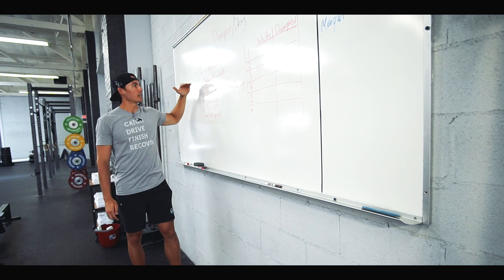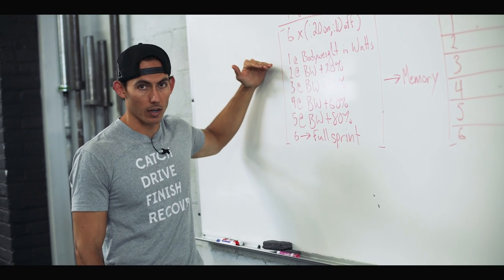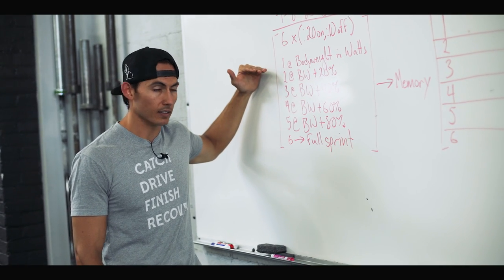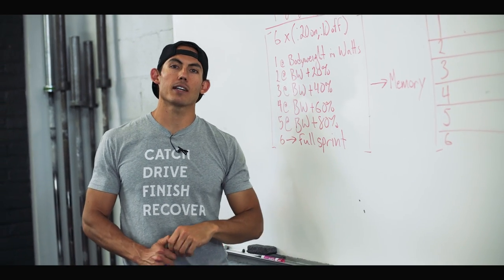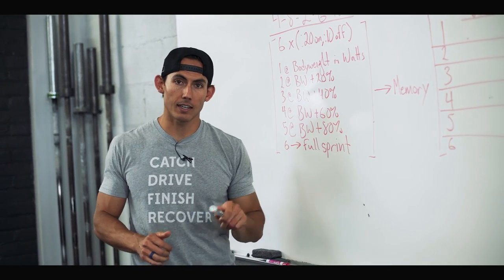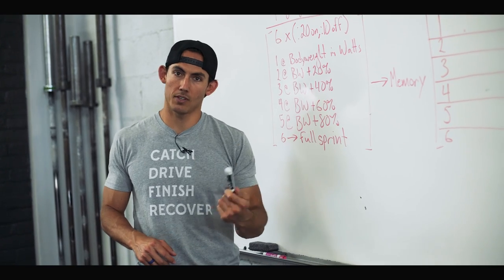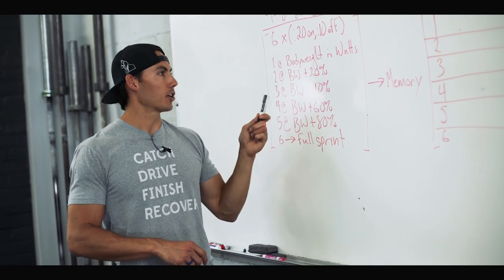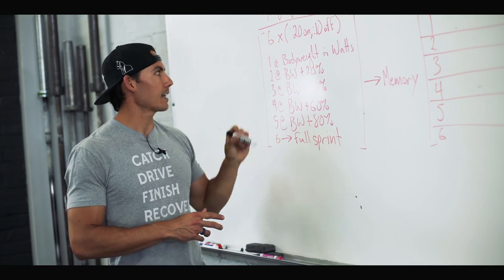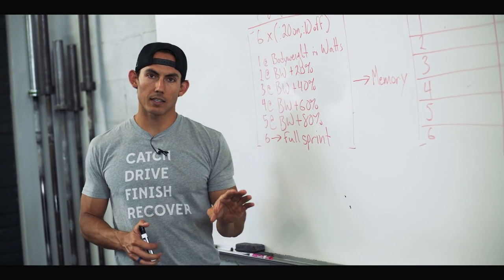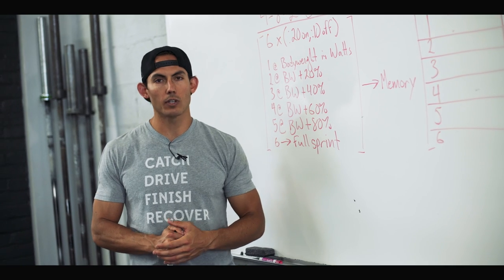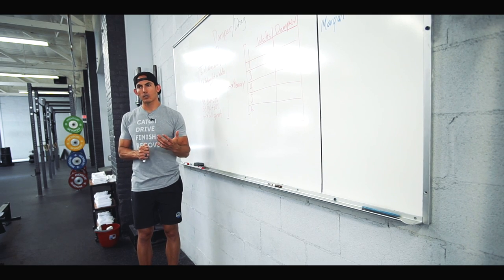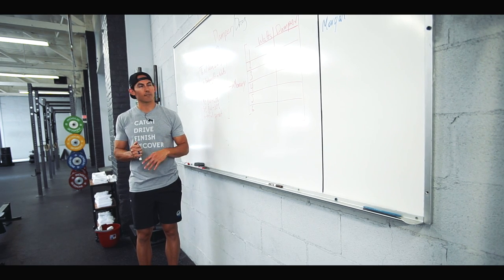Inside of these six rounds you are going to have very specific prescriptions. In round one, for your first 20 seconds you are going to row at your body weight in watts. That is your body weight in pounds, not kilos. If you've been following along with Dark Horse for a while, you'll find that holding your body weight in watts is actually pretty accomplishable and should not be that fatiguing.